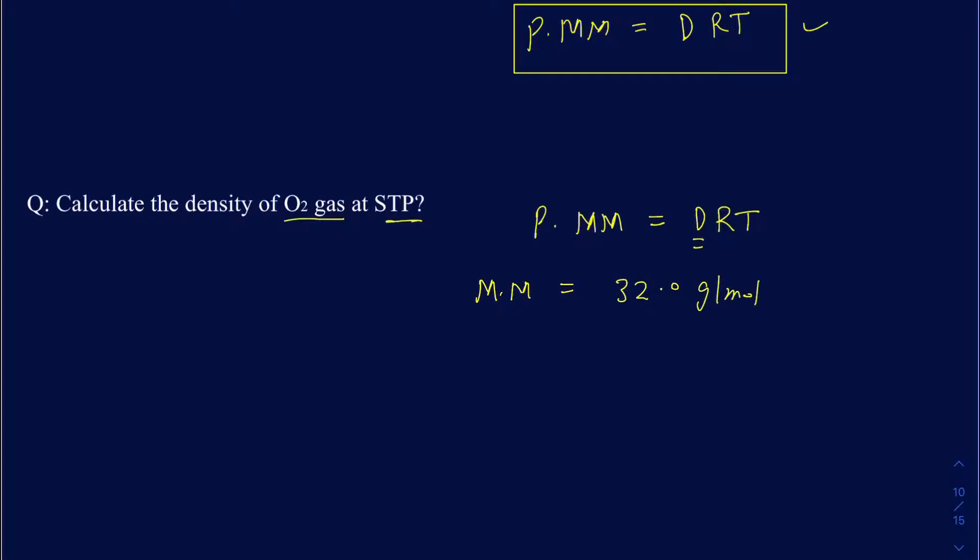Then you want to look at what the pressure is going to be. In this particular case, they said it's at STP, but they very well could give you the pressure and the temperature separately. So at STP, your pressure is going to be 1 atmosphere, and the temperature is going to be 273 Kelvin.